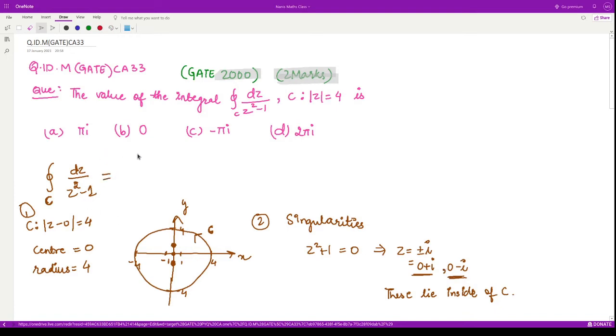The value of this integral according to Cauchy Residue Theorem is equivalent to 2πi multiplied by the sum of the residues calculated at these two singularity points. That means we are to evaluate the residue of the function f(z) = 1/(z² - 1), the residue calculated at the point iota plus the residue at the point minus iota.